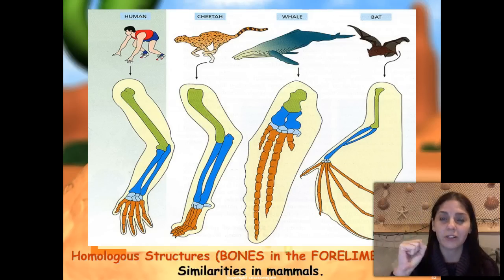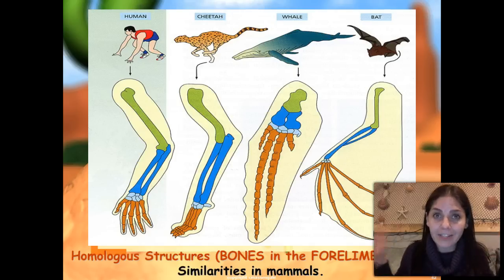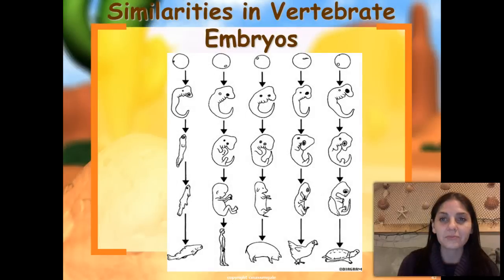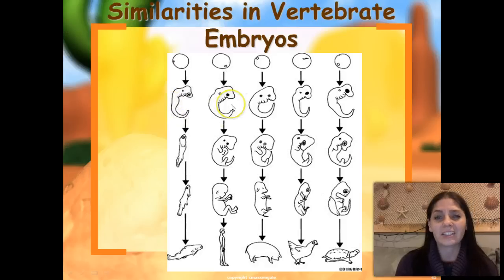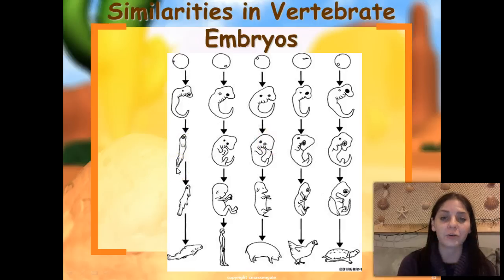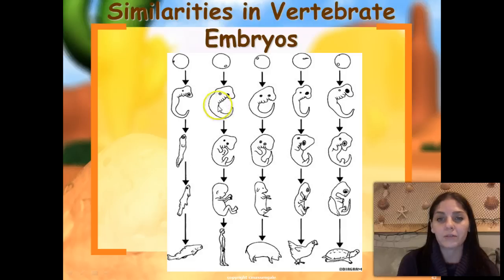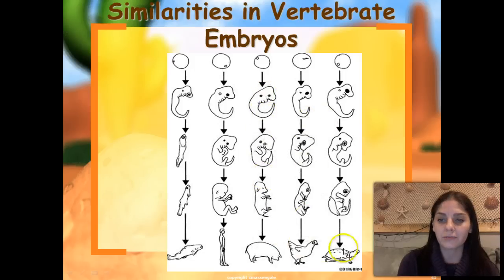Humans adapted for gripping; cheetahs are adapted for speed; whales adapted for their aquatic environment; and bats adapted the ability to fly. Here is an example of similarities in vertebrate embryos — all of us start off looking like a weird slimy alien fish, but as development progresses we develop into different vertebrates. We actually have a post-anal tail and gills which disappear as we develop as a fetus. Examples shown include a fish, a human, a pig, a chicken, and a turtle.